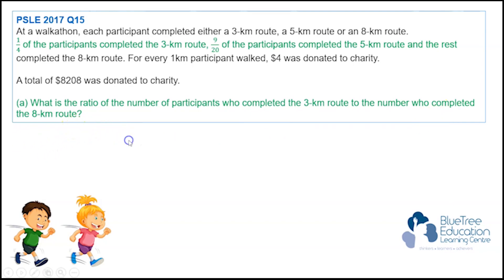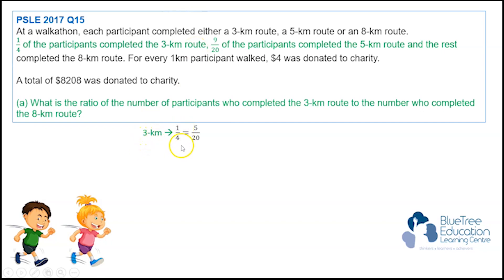We'll pick up the information in green over here that says one quarter of the participants completed a 3km route. So we'll write 3km, and one quarter is given. I'm going to change it to a denominator of 20, so it becomes 5 over 20.